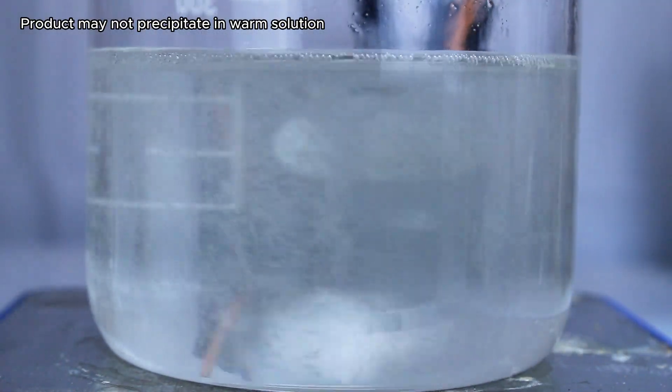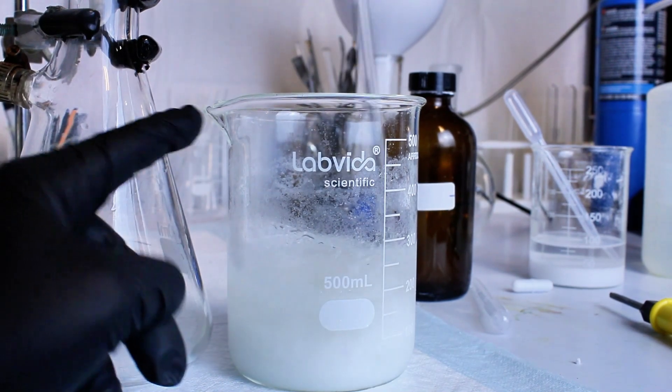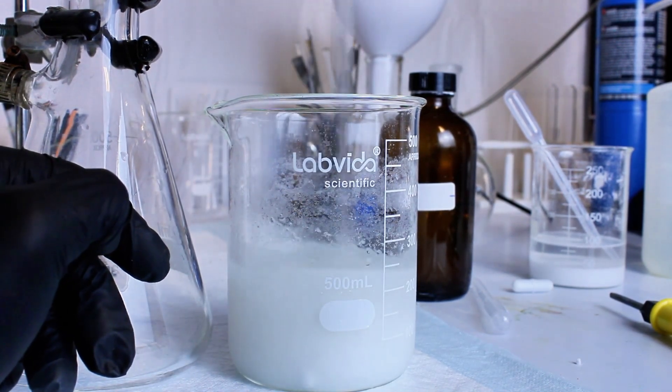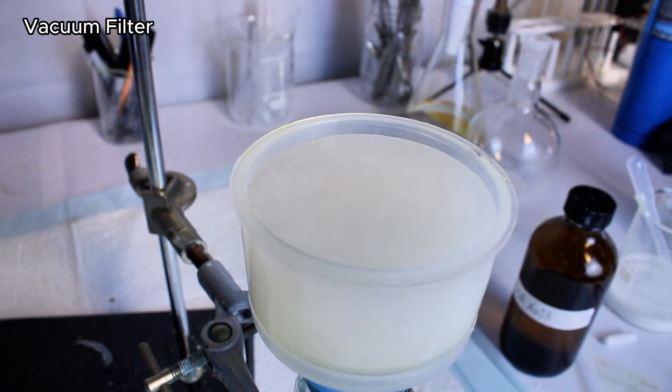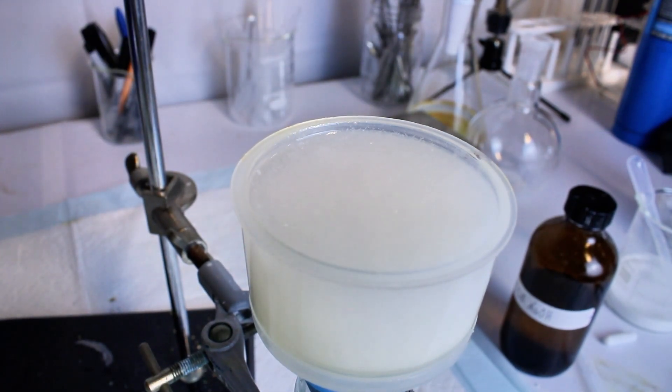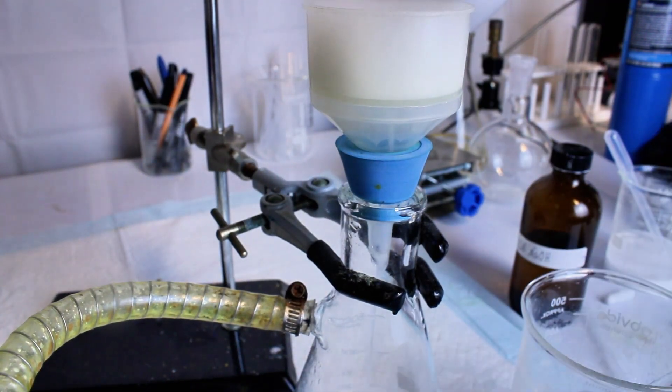In any case, after the beaker has cooled down and my benzocaine precipitates, I now need to filter it off, and I'm going to do this by vacuum filtration. This can also be done with a simple coffee filter, but the vacuum filter is a lot faster and since I have it, I might as well use it. Once the product is done filtering, I want to rinse it thoroughly with ice cold water to get rid of any residual sodium sulfate or unreacted reagents.